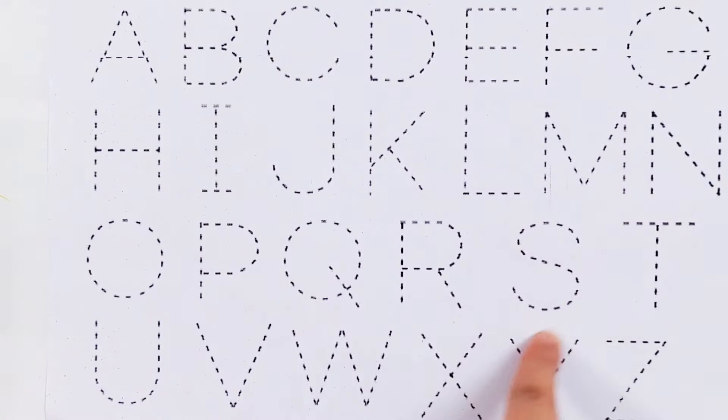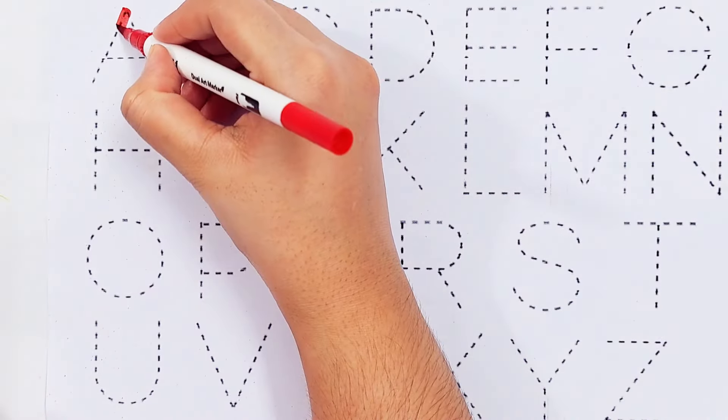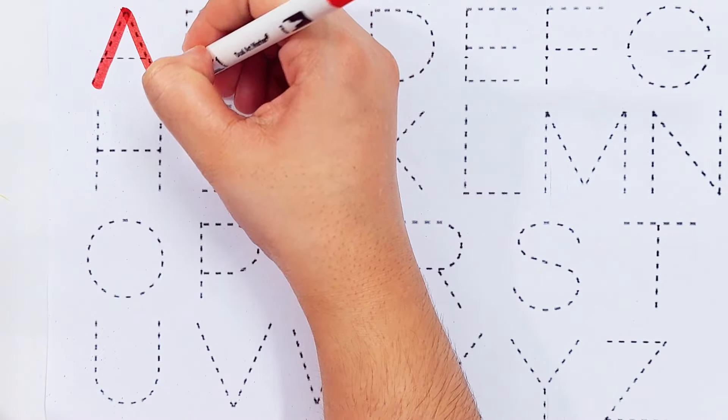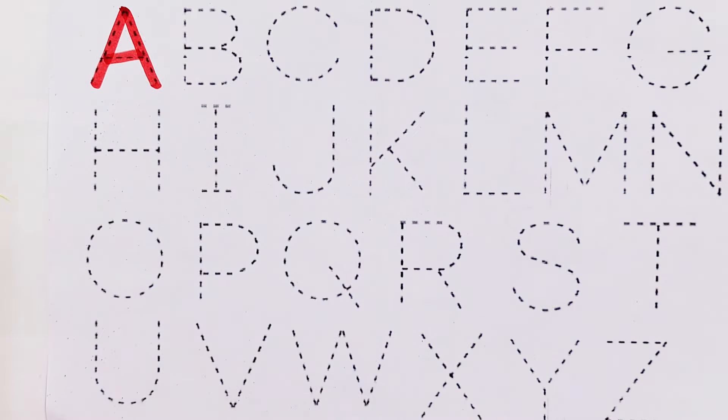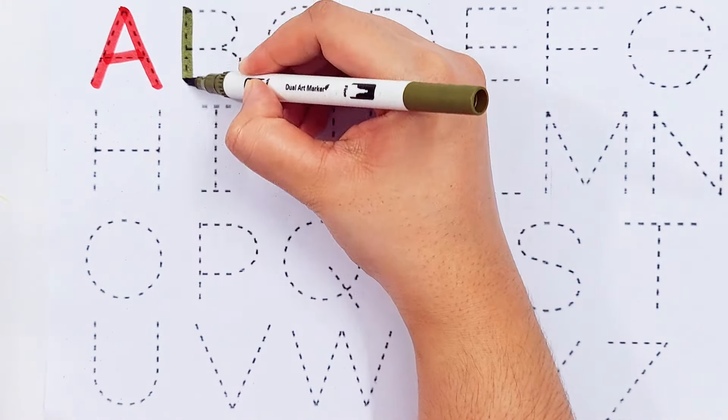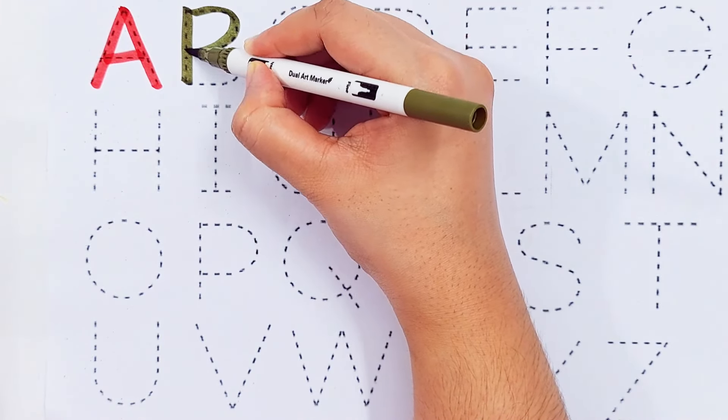Let's try to learn some alphabets. A, A for airplane. B, B for butter.